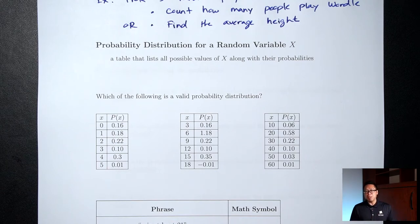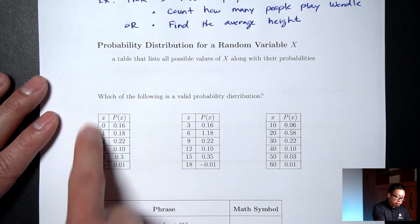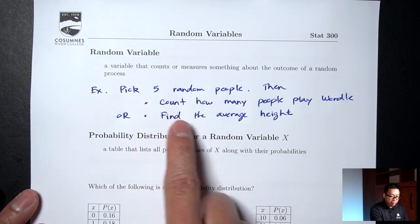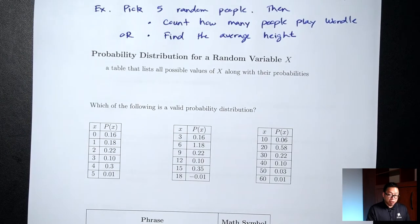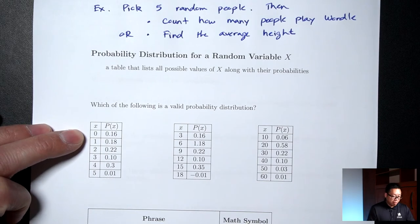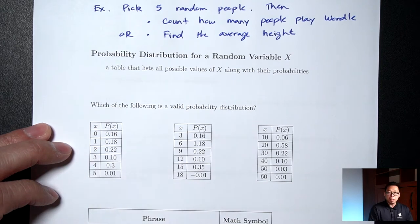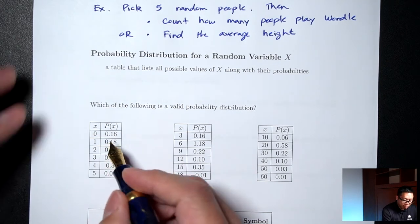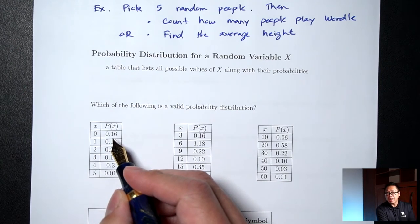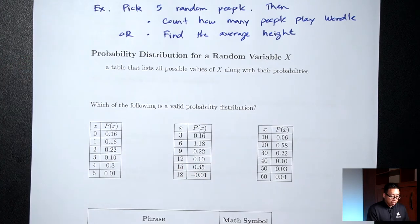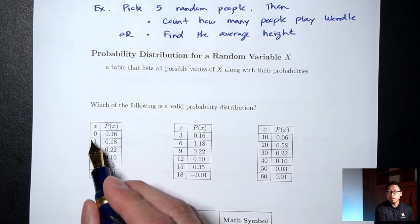What are the requirements of a probability distribution? First, let's talk about how to read this table. The x column lists all possible values of x — in this case, picking five people and counting how many play Wordle, so x goes from zero to five. The P(x) column contains probabilities. For example, 0.16 means a 16% chance that none of the five people play Wordle.